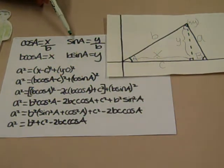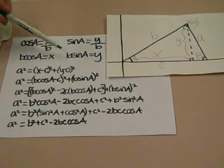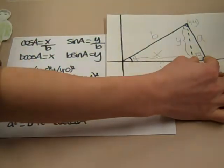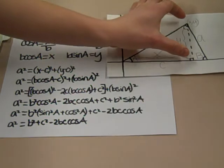Similarly, because sine A equals y over B, y equals B sine A. Through the distance formula, we know that side length A squared equals x minus C squared plus y minus 0 squared.